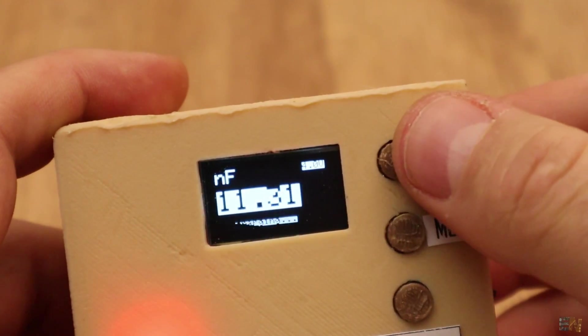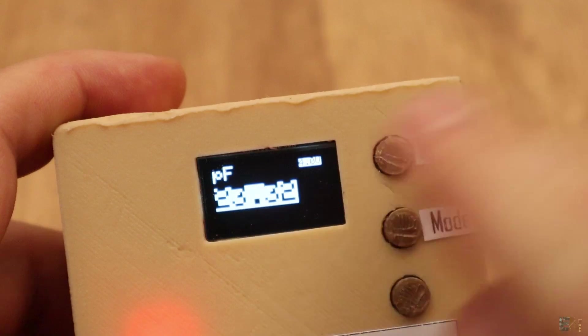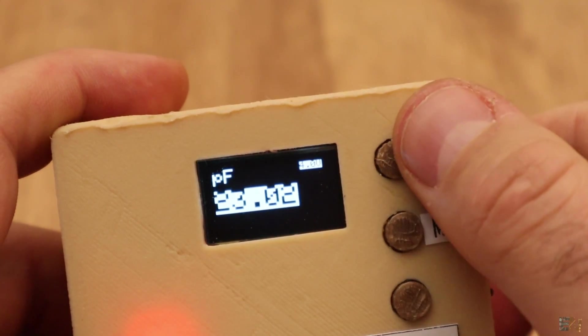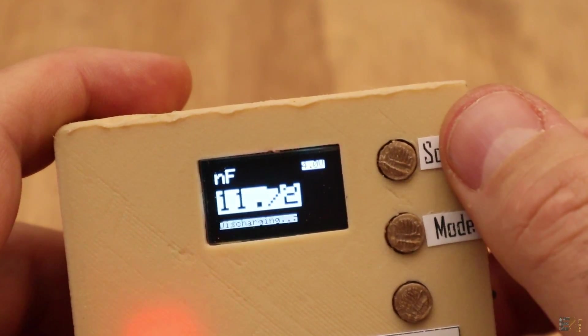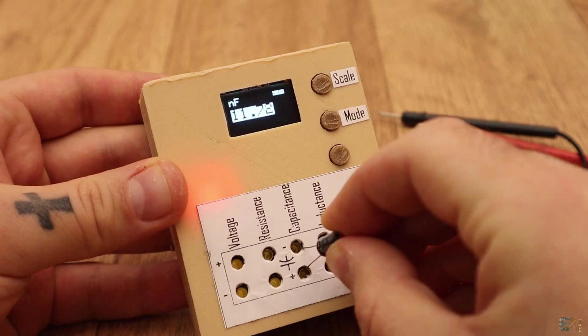Now I push the button once again and I get into capacitance mode. Here we have two ranges for picofarad up to nanofarad and then for higher values up to 1F. The bigger the capacitor, the more time it will take to make the measurement.